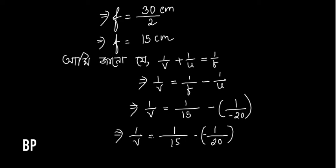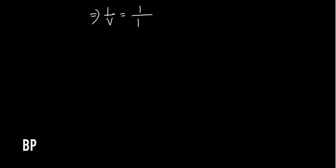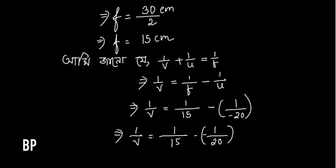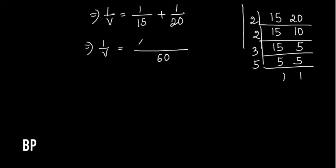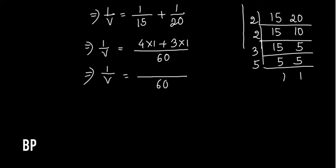So, 1 by V is equal to 1 by 15, and we subtract minus 1 by 20. Solving this: 4 by 60 plus 3 by 60 gives us 7 by 60. So V is equal to 60 by 7.